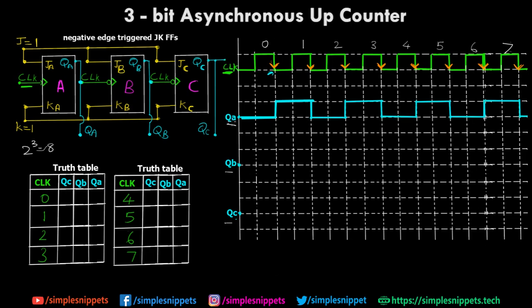Now notice that the output QA of the first JK flip-flop is also the clock to the second flip-flop B. So QB — the output of flip-flop B — is dependent on the clock provided by QA, not the original clock. We are not going to follow the original clock for QB; we are considering QA as the clock for QB. QB is also negatively edge triggered, so it will be activated only on the negative edges of QA.